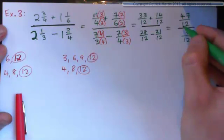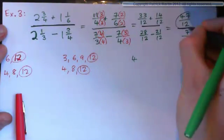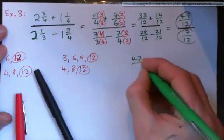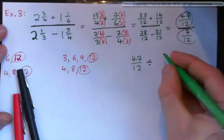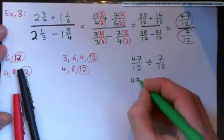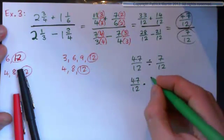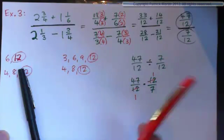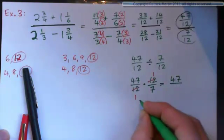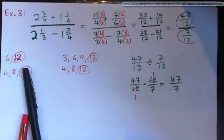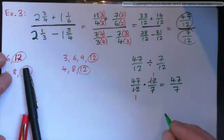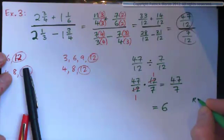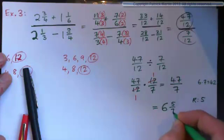So it's 47 twelfths all over 7 twelfths, which means 47 twelfths divided by 7 twelfths. That's 47 over 12 multiplied by 12 over 7. The 12s cross-cancel, leaving 47 over 7. That's an improper fraction. As a mixed number: 7 into 47 goes 6 times — since 6 times 7 is 42 — remainder 5. So the answer is 6 and 5 sevenths.